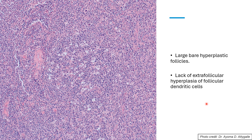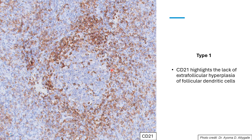Pattern one shows large hyperplastic follicles without any extrafollicular hyperplasia of the follicular dendritic cells on CD21 stain — the CD21 stain only shows the follicles themselves, lacking extrafollicular FDC hyperplasia.